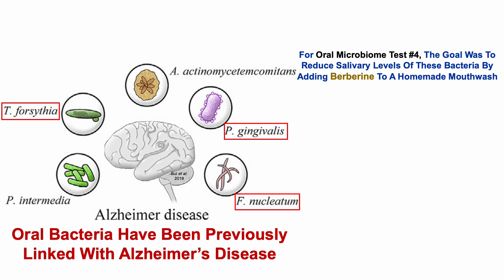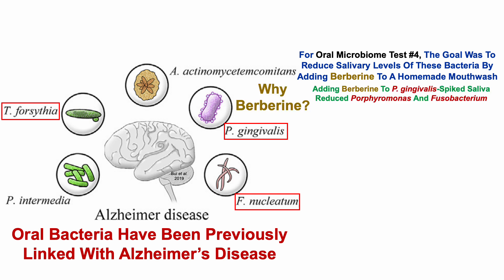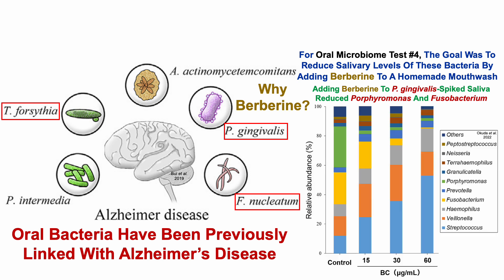The goal is to reduce salivary levels of these bacteria by adding berberine to a homemade mouthwash. Why berberine? In an earlier video I showed data that adding berberine to P. gingivalis-spiked saliva reduced levels of Porphyromonas and Fusobacterium, and that's what we can see here.